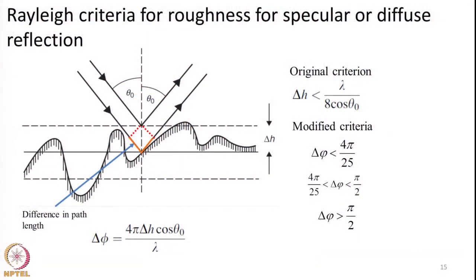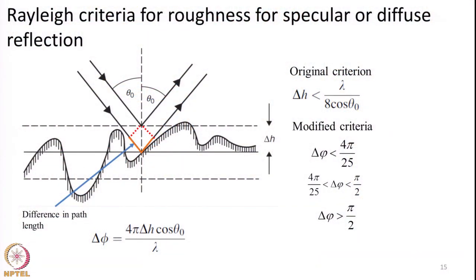The criteria is known as Rayleigh criteria. Based on Rayleigh criteria we will classify a surface as smooth or rough. Let us now see what Rayleigh criteria is.